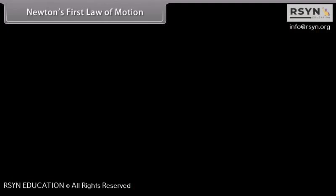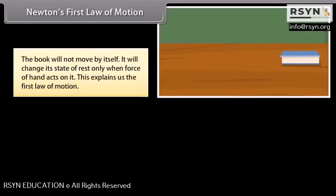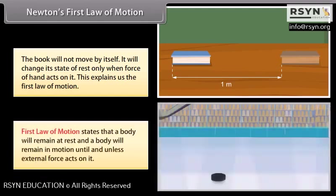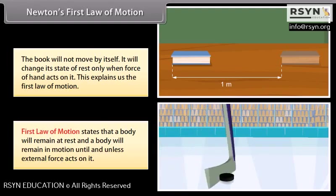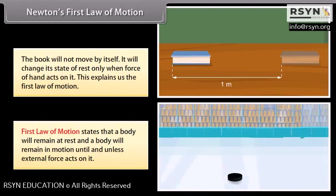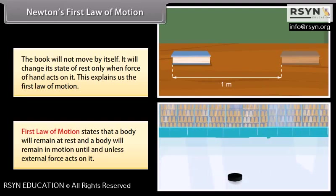Newton's first law of motion. The book will not move by itself. It will change its state of rest only when force of hand acts on it. This explains the first law of motion. First law of motion states that a body will remain at rest and a body will remain in motion until and unless external force acts on it.